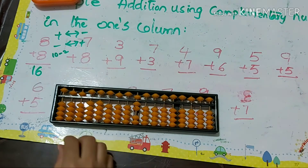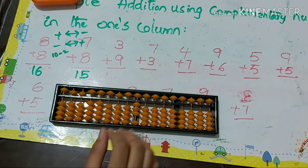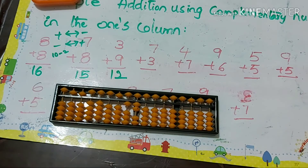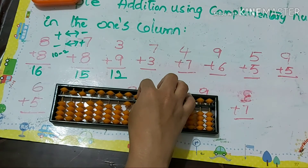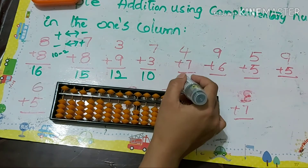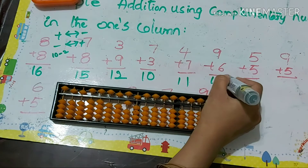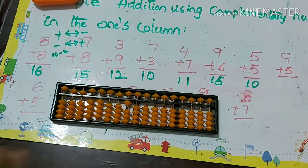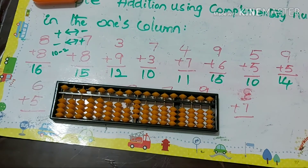Next: 7 plus 8. Using +10 minus 2, the answer is 15. Then 3 plus 9: formula is +10 minus 1, answer is 12. Next, 7 plus 7 plus 3: 3's big friend is 7, so +10 minus 7, answer is 10. Then 4 plus 7: +10 minus 3, answer is 11. Next, 9 plus 6: +10 minus 4, answer is 15. Finally, 5 plus 5 plus 10 minus 5: the answer is 14.